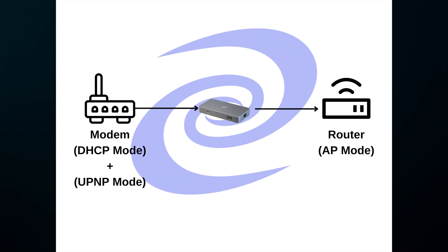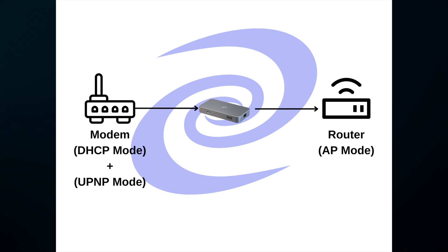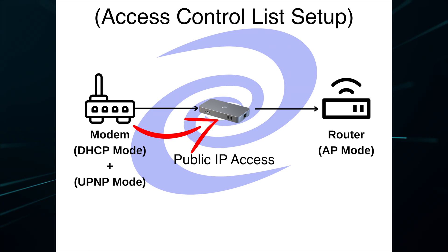This final setup is the network topology that will be used with access control list. Your modem will be in DHCP mode as well as UPnP — Universal Plug and Play. This will allow your Deeper Connect in the middle to have public IP access while the router is only in AP mode or bridge mode.